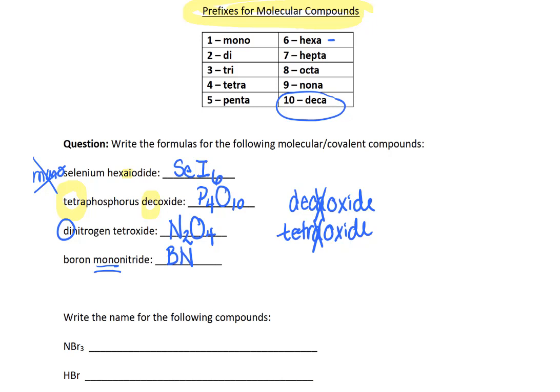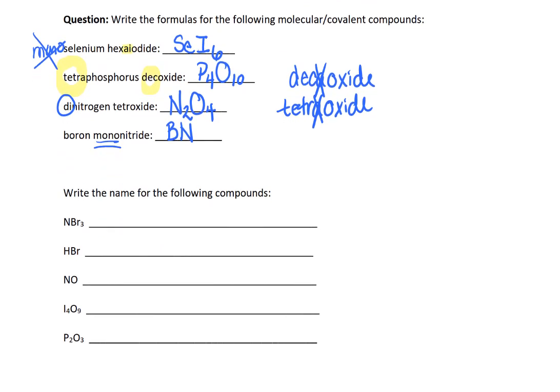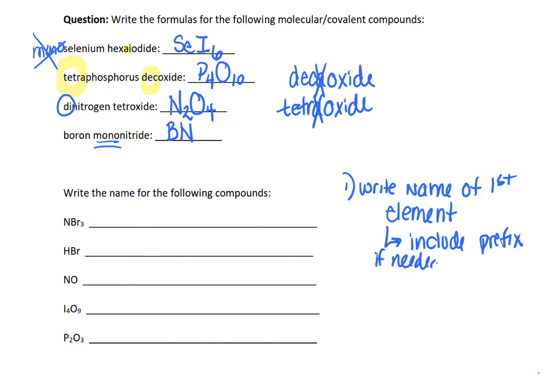At this point, we're probably ready to go the other direction and, given a compound's formula, generate a name. So here's some examples. I have nitrogen and then I have bromine. What we do is we write the name of first element, and we include the prefix if needed. It's needed if you have more than one. You only have one nitrogen here, so I'm just going to do nitrogen and leave it at that.